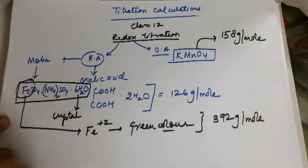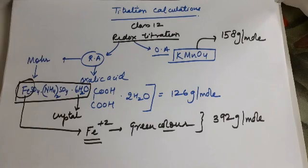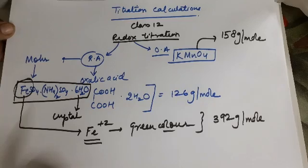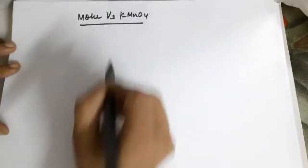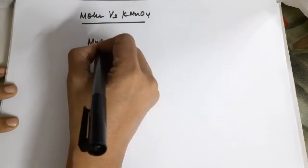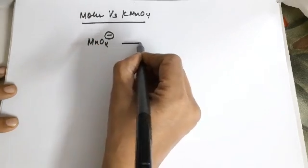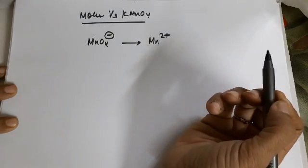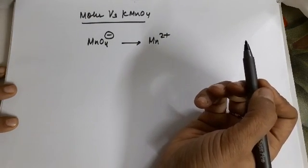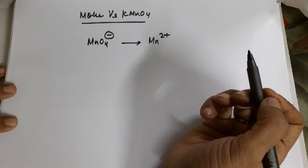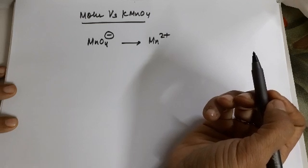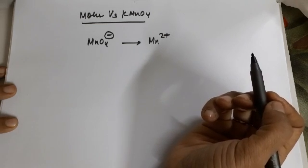Our interest in Mohr salt is the ferrous ion. Moving to the calculation part, you need to know the reactions taking place. There are two titrations: Mohr salt versus KMnO₄, and oxalic acid versus KMnO₄. For Mohr salt versus KMnO₄, the MnO₄⁻ from KMnO₄ changes to Mn²⁺ because you use a highly acidic medium — specifically one test tube of dilute sulfuric acid per titration.